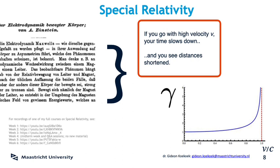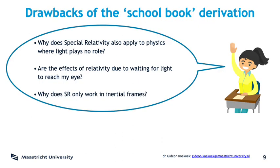In everyday life, things look as they do in Newtonian mechanics. What we went through in the last few slides is what I would like to call the schoolbook derivation of special relativity. It does have its appeals — it's straightforward to follow, easy to visualize because everybody is used to light, and the mathematics is not that hard either. Ideal, therefore, for a high school curriculum. But upon closer inspection, there are a few things not quite right with it and might even lead to downright misconceptions in students and sometimes even in the teachers.